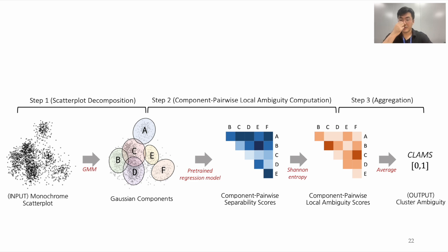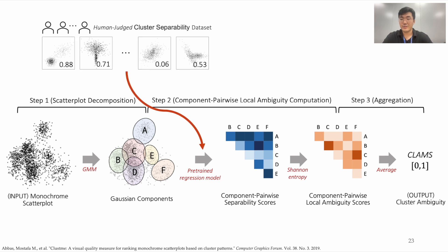Now, let's detail how CLAMS works. After CLAMS receives a monochrome scatterplot as input, it first decomposes the scatterplot using the Gaussian mixture model. Then, the system computes the separability between the Gaussian components in a pairwise manner. Finally, pairwise separability scores are converted into pairwise ambiguity, and these ambiguities are averaged to generate the final cluster ambiguity. To estimate separability between Gaussian components, we use the CLOSME dataset, which consists of 1,000 scatterplots, each consisting of two random Gaussian components. Human-judged separability is labeled to each scatterplot, constructed by asking 34 participants whether each scatterplot consists of one or two clusters. The ratio of participants who reported two clusters becomes the separability score — if every participant said one cluster, the score is 0; if half reported so, the score is 0.5.